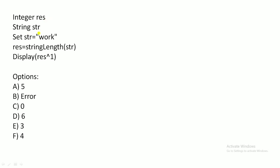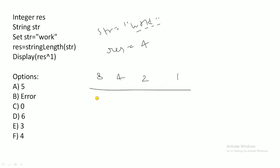The next question: integer result, string str. str is assigned 'verb work'. result is assigned the string length of str — that is 1, 2, 3, 4 characters — so result = 4. Then display result XOR 1. To solve this, we convert 4 and 1 into binary using the 8-4-2-1 place value code. 4 in binary is 0100, and 1 in binary is 0001.